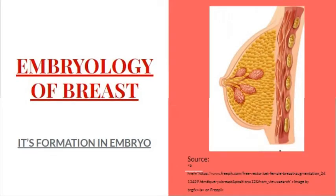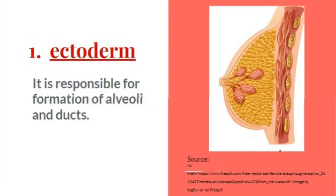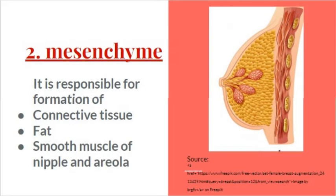Embryology of the breast: its formation during embryonic life. Sources — it develops from the epidermis, part of the ectoderm, and mesenchyme. The ectoderm is responsible for formation of alveoli and ducts. The mesenchyme is responsible for formation of connective tissue, fat,